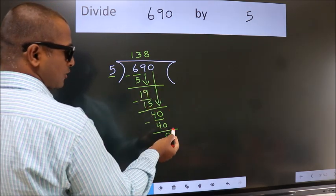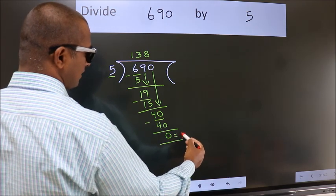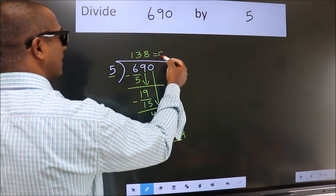No more numbers to bring it down. So, we stop here. This is our remainder. This is our quotient.